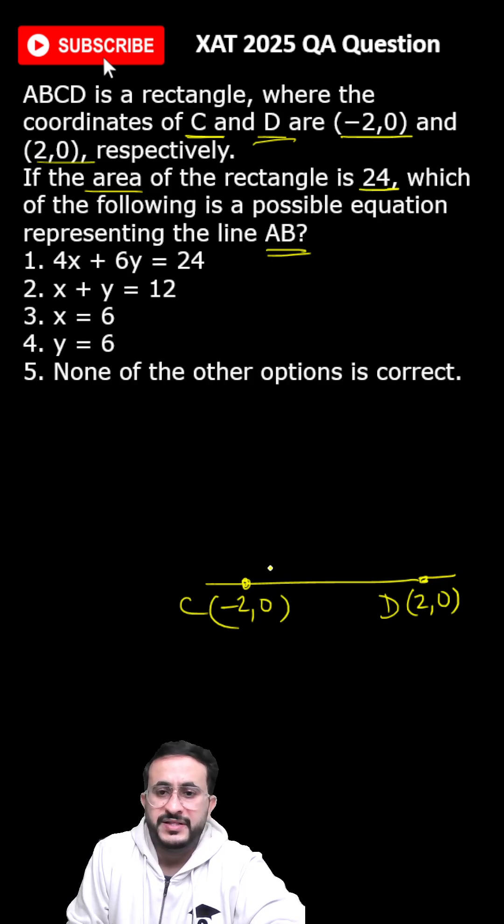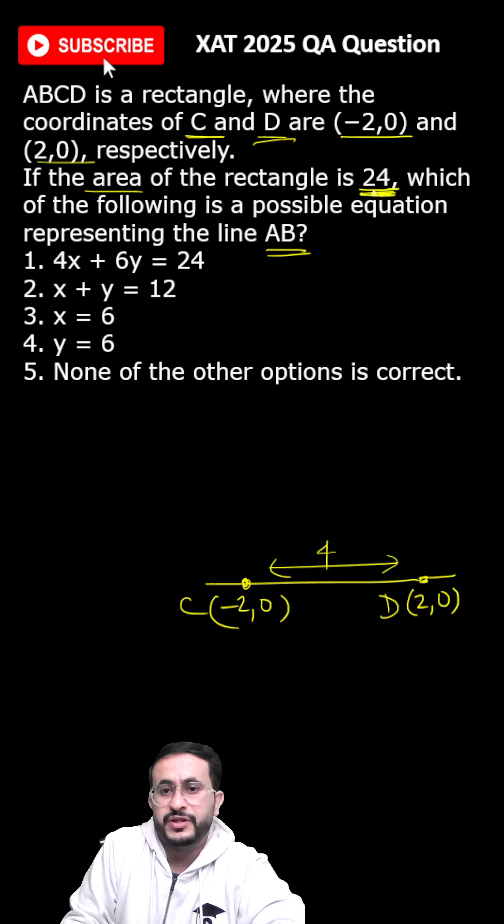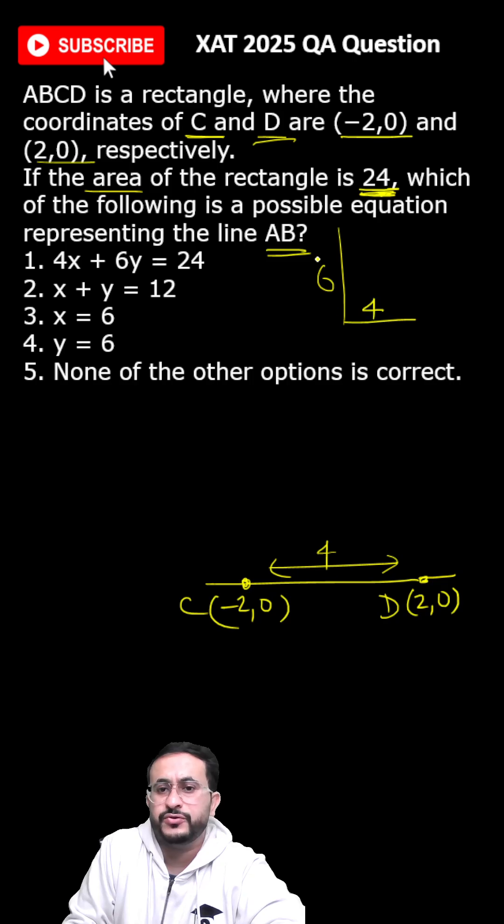If we look at this distance, then this is 4. Now, area 24 is given, so that means the other side should be 6. If this side is 4, then the other side should be 6.